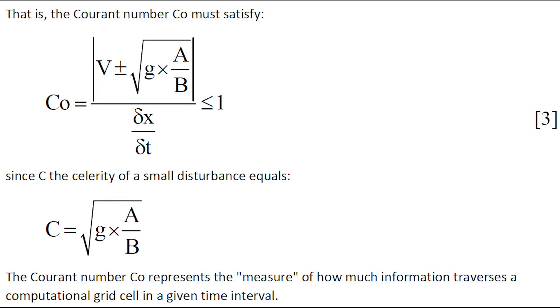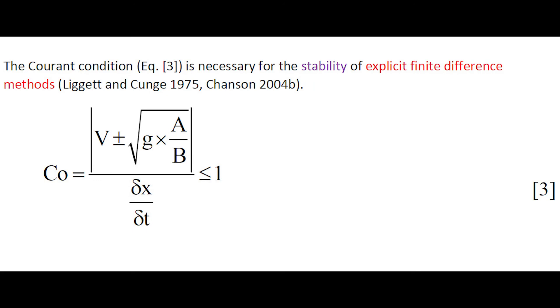The Courant number represents a measure of how much information traverses a computational grid cell in a given time interval. The Courant condition is necessary for the stability of explicit finite difference methods.